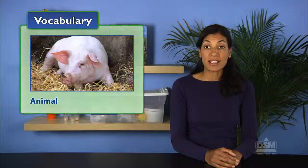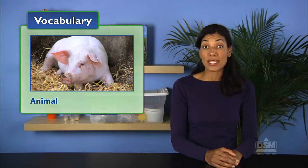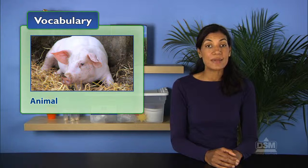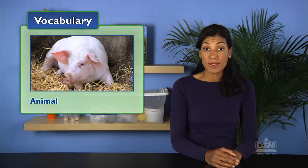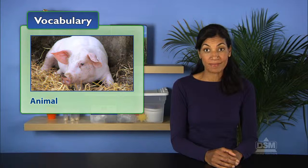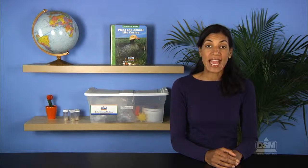Then define animal as a living thing that cannot make its own food, but instead must eat plants or other animals to get food energy. In contrast to a plant, an animal can typically move from place to place, and an animal does have sensory organs.